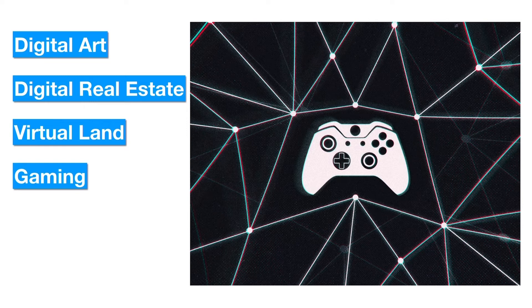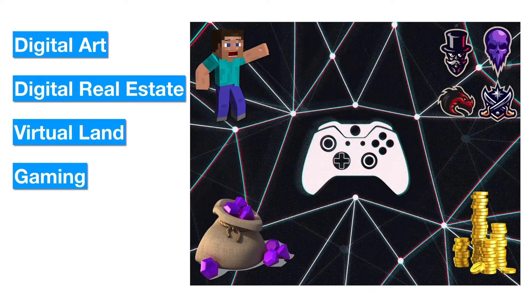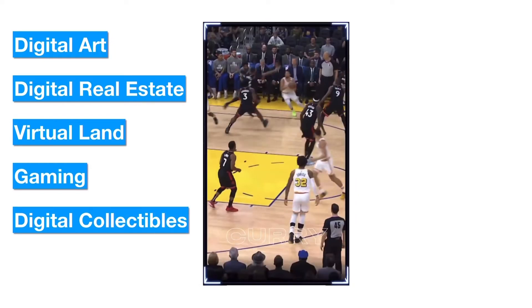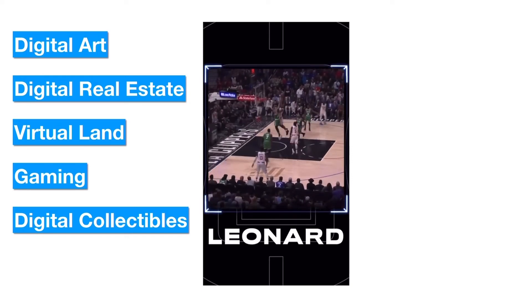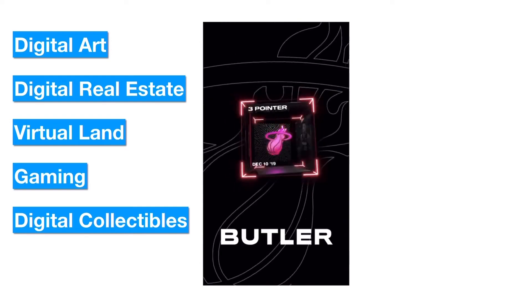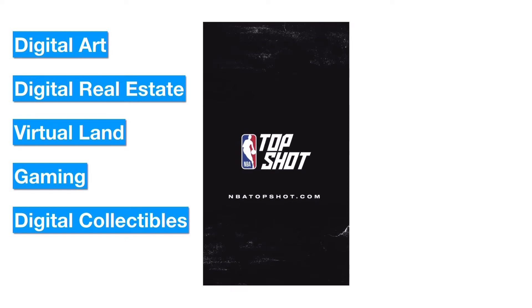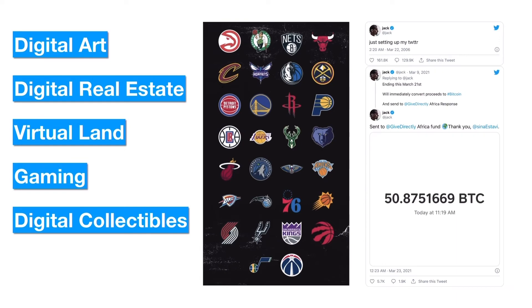Gaming assets such as skins, avatars, usernames, gaming currency, and artifacts may be traded as NFTs. In digital collectibles, iconic sporting moments may be sold in video or picture format. The NBA has already seen more than $250 million in NFT sales. Similarly, one can imagine people paying millions of dollars to own MS Dhoni's World Cup-winning six. The field is not limited to sports — NASA may sell Neil Armstrong's moon landing as an NFT, and iconic shots from films may be auctioned by studios. Recently, Twitter founder Jack Dorsey's first tweet sold for $2.9 million.